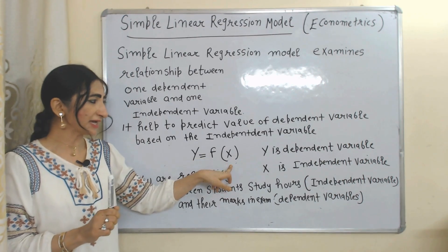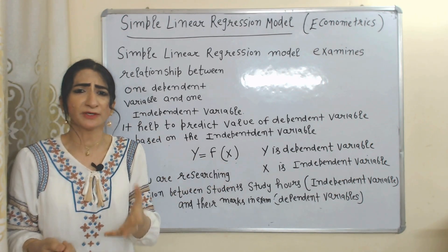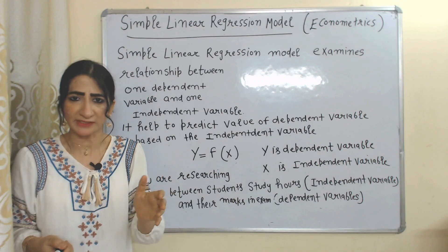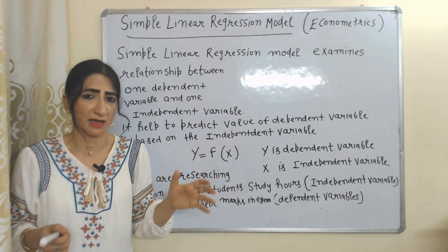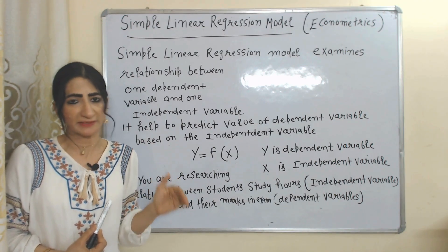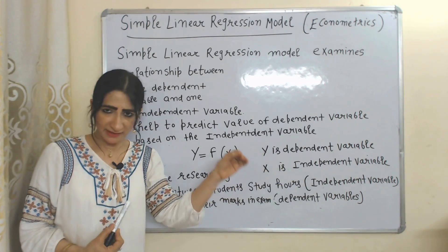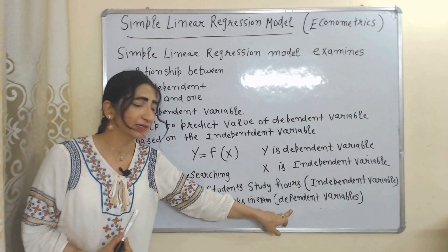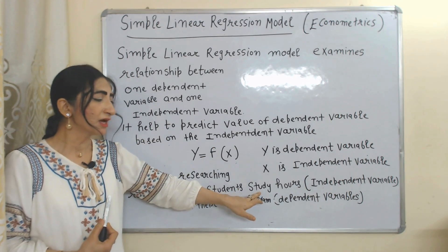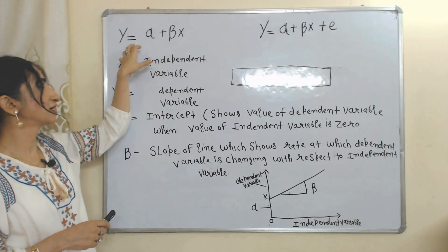For example, y is a function of x, where y is the dependent variable and x is the independent variable — y depends on x. For example, if you want to study the relationship between a student's hours of study and their marks in an exam, obviously student marks depend on how much time they spend studying. That's why study hours are the independent variable and marks in the exam are the dependent variable.